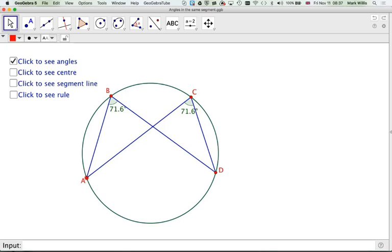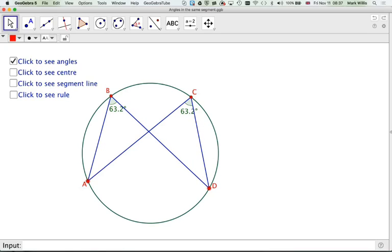If we move this one here, A or D, then the angles will change, but both of them will remain the same. Now, why is this so?